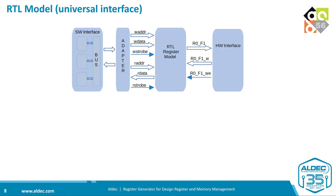With the universal interface, we need to add an additional adapter component to transform signals from the universal interface into the one used in our bus. Writing new data into the register block is very simple — we put valid data on W-data and W-address, and after a pulse on the write strobe, we get new data in our register. For reading, we put a valid address and after a pulse on the read strobe we get the expected data on the R-data signal.